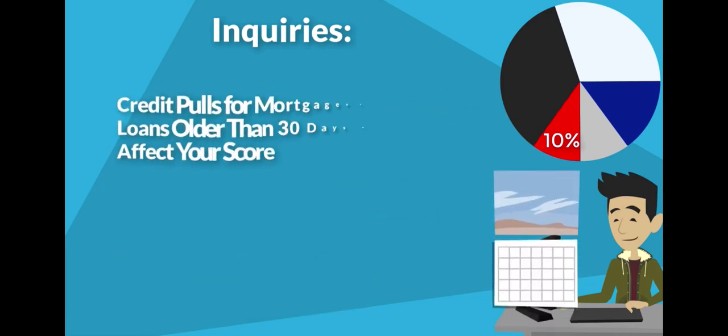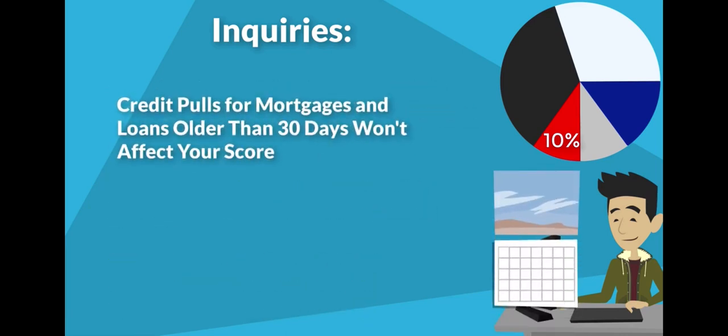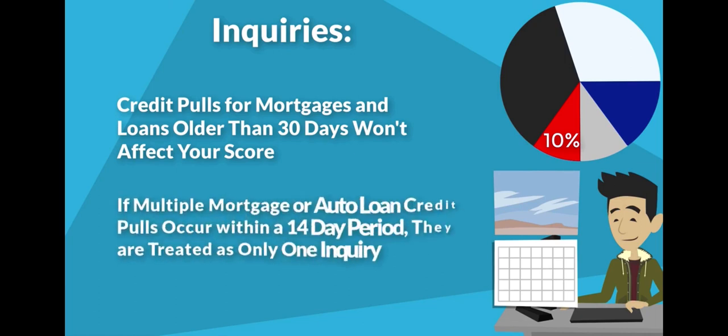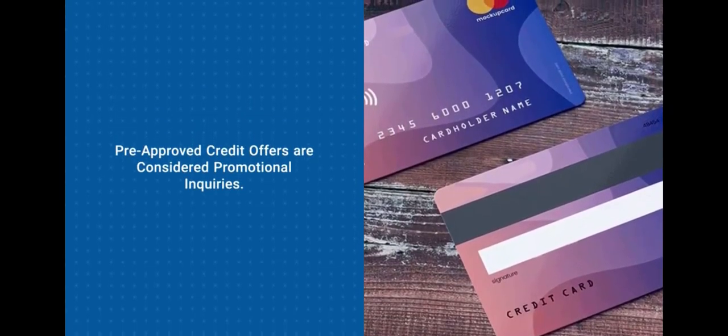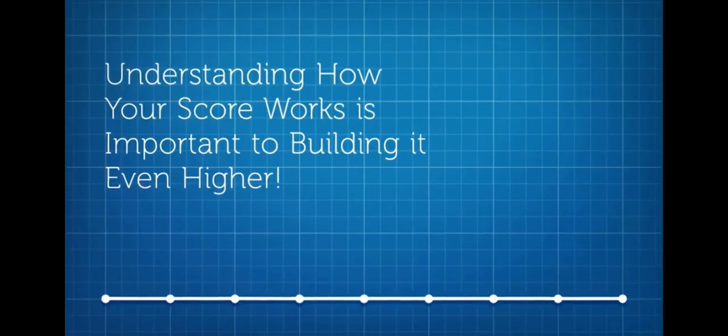Credit pulls for mortgage and automobile loans that occur more than 30 days prior to scoring have no effect on the credit score. Outside of this 30-day period, mortgage and automobile loan credit pulls that occur within any 14-day period are treated as a single inquiry. Pre-approved credit offers are considered promotional inquiries and will not affect your credit score.